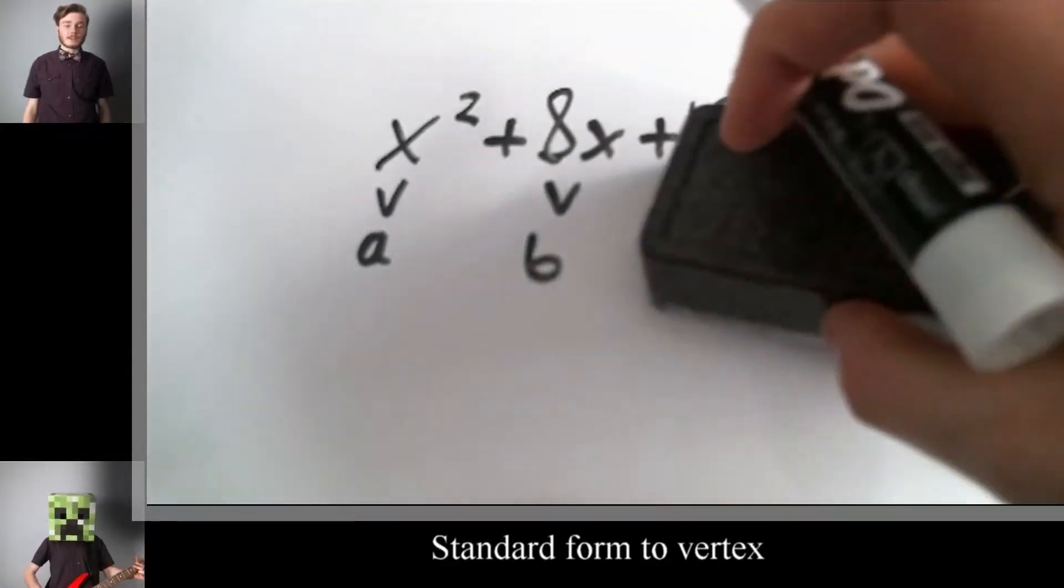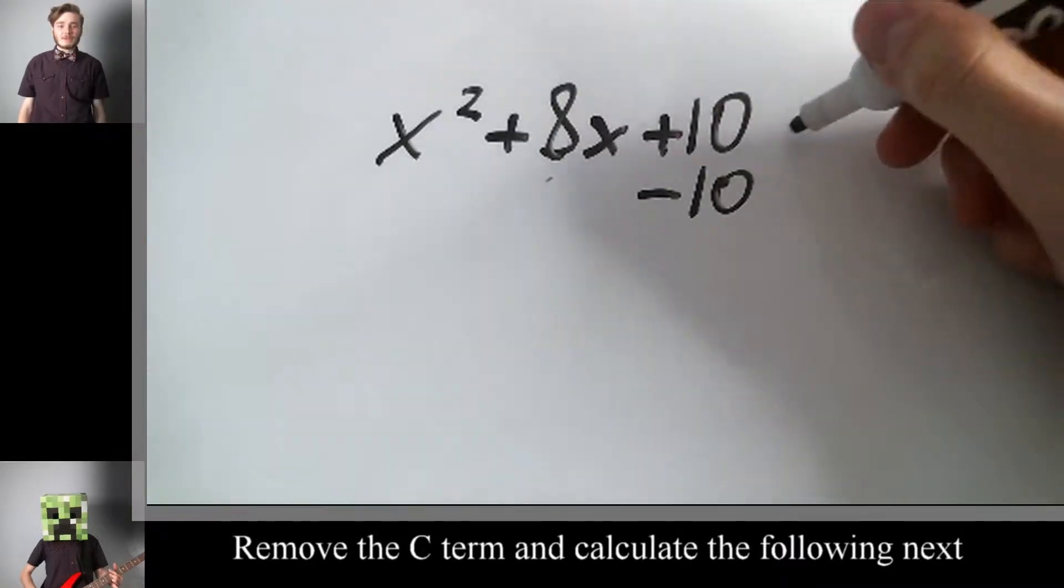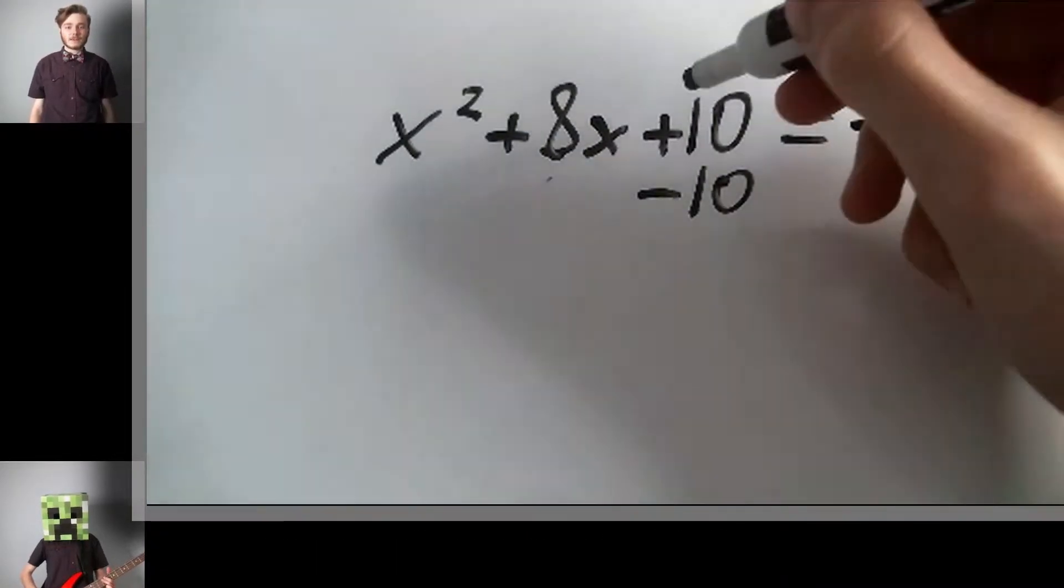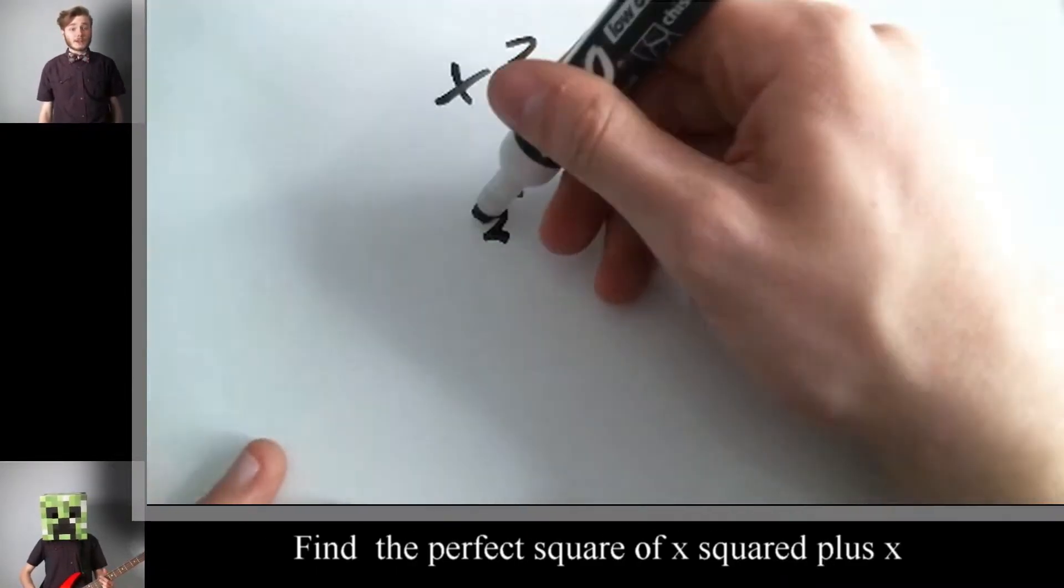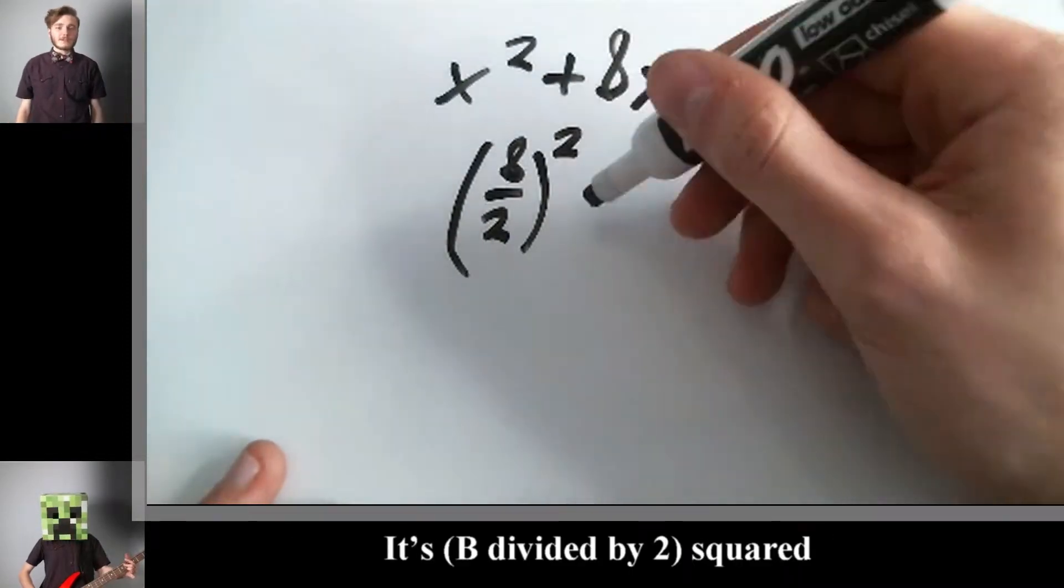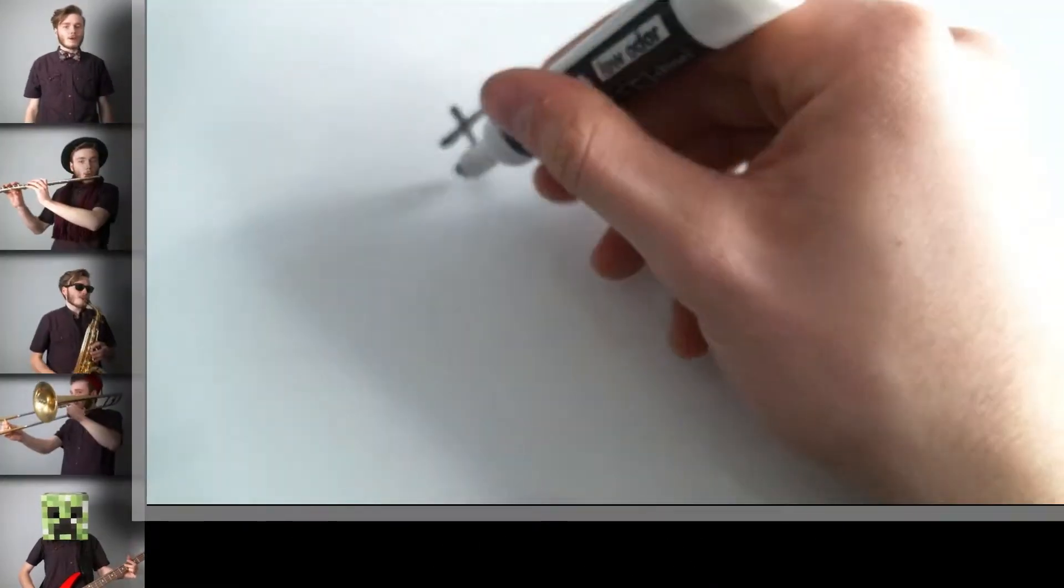Standard form to vertex. Remove the c term and calculate the following next. Find the perfect square of x squared plus x. It's p divided by 2 squared.